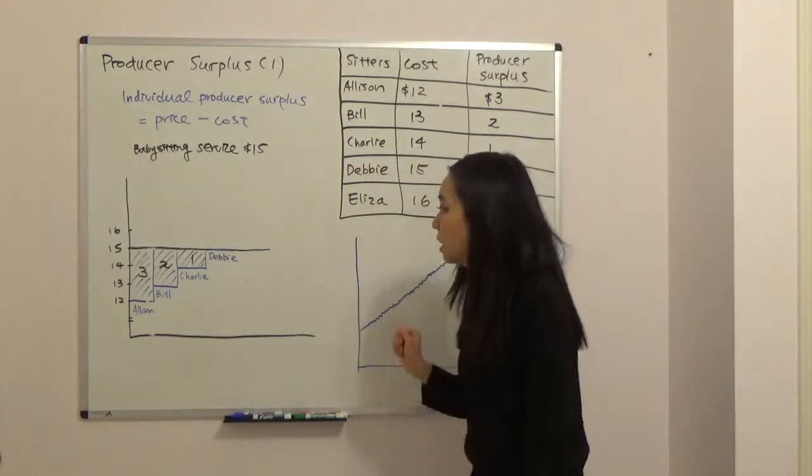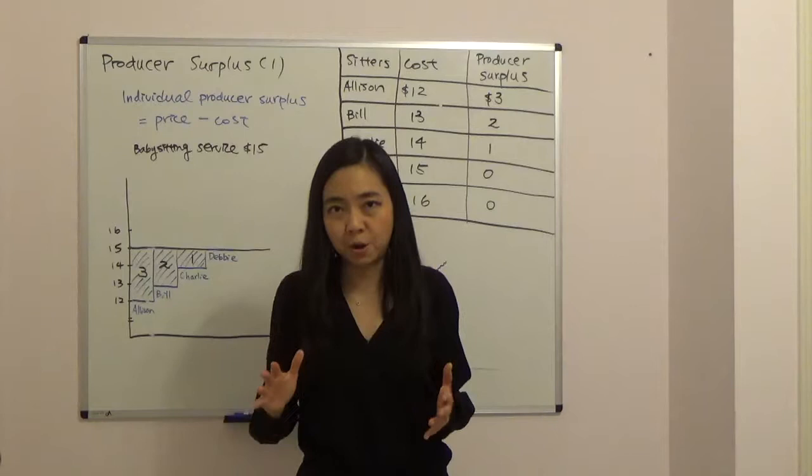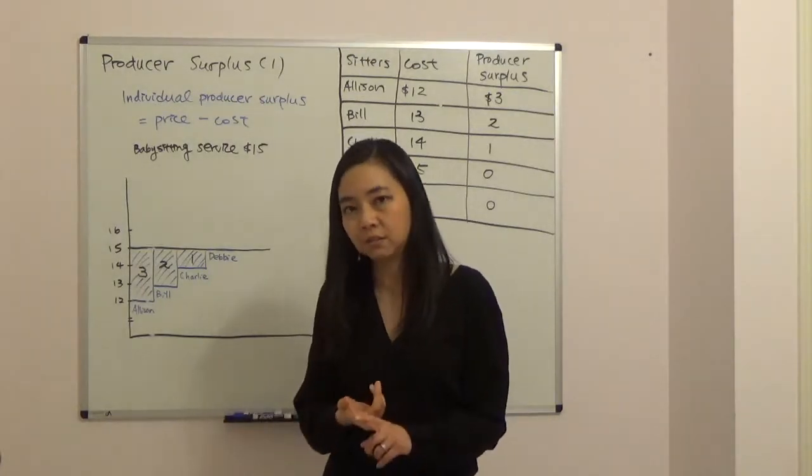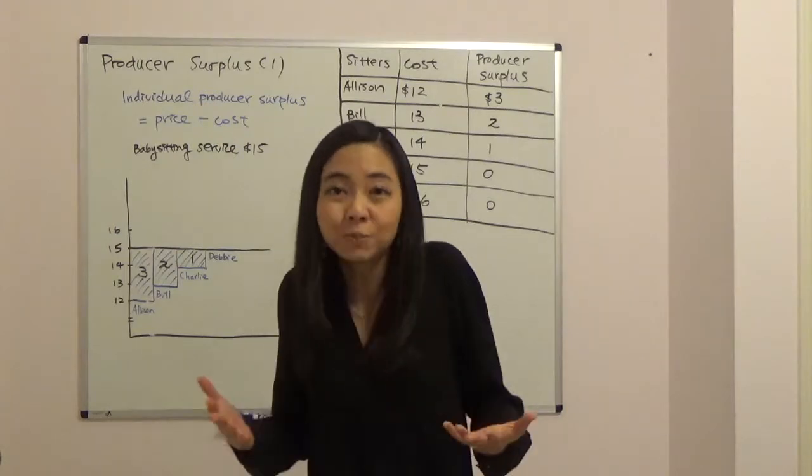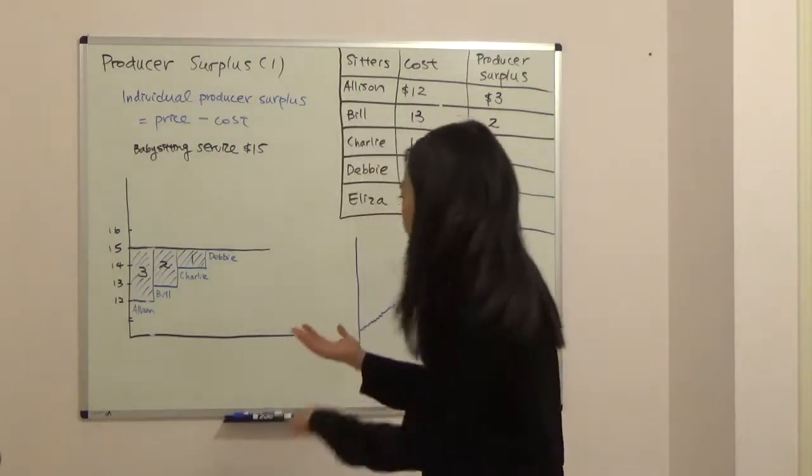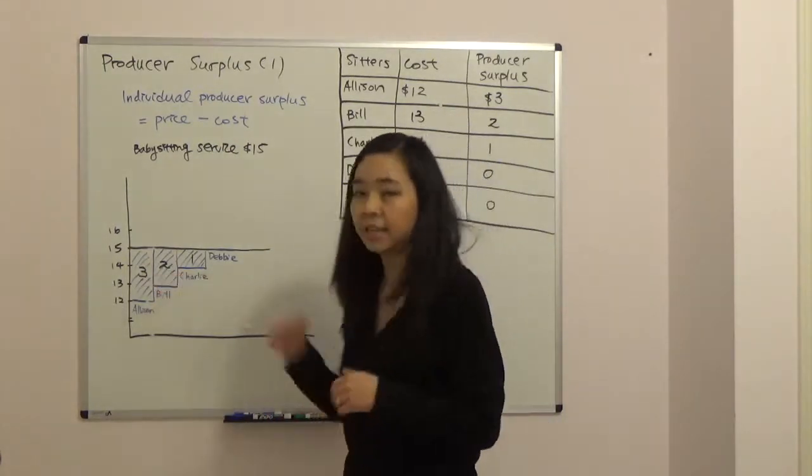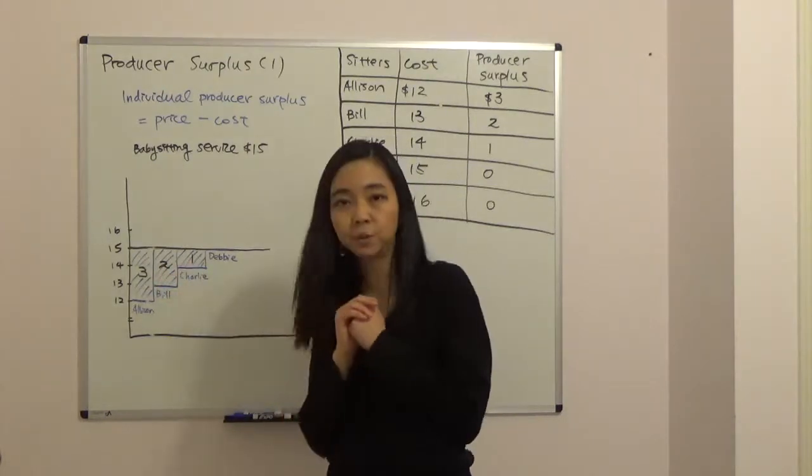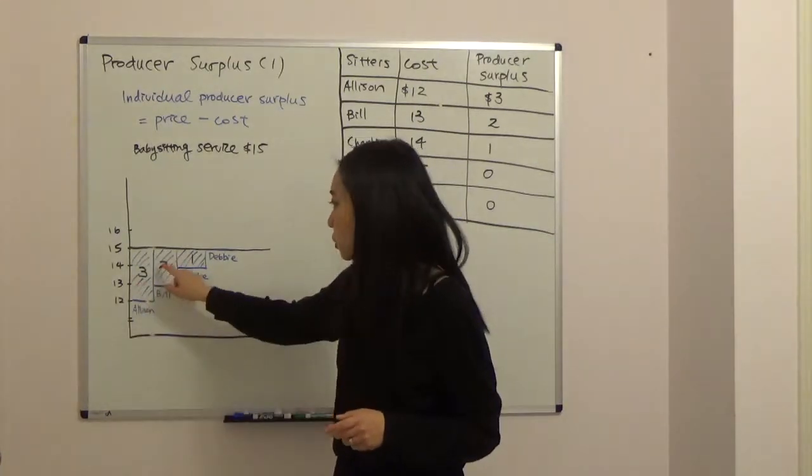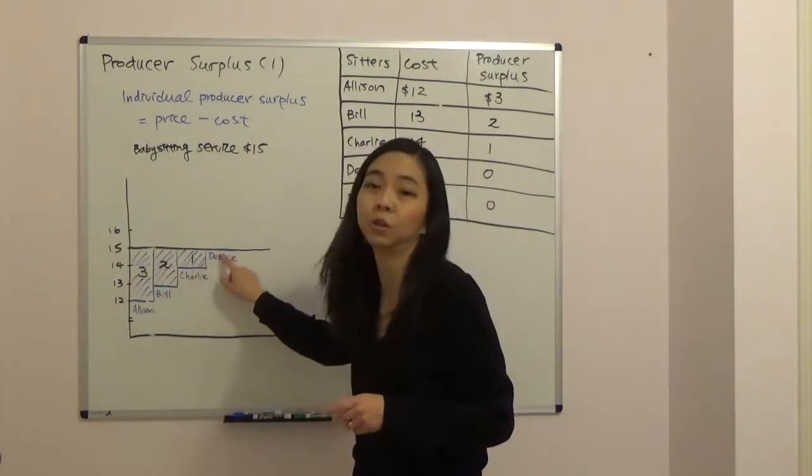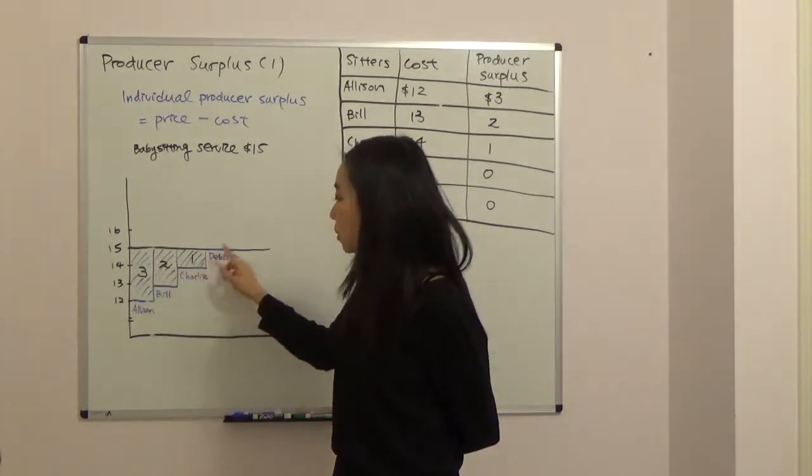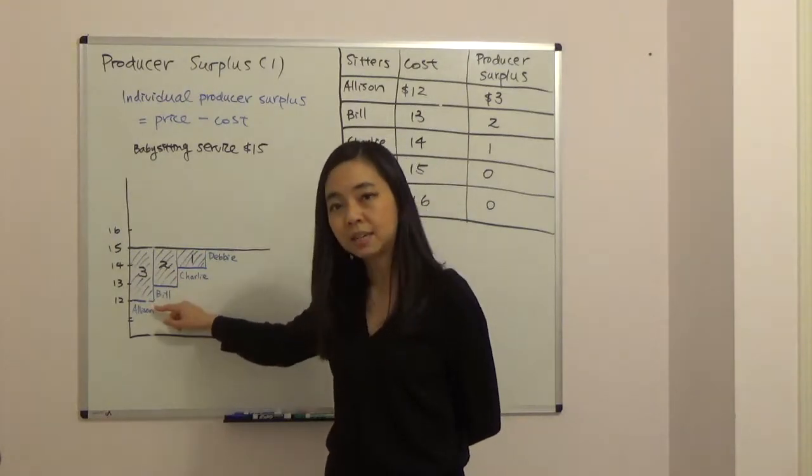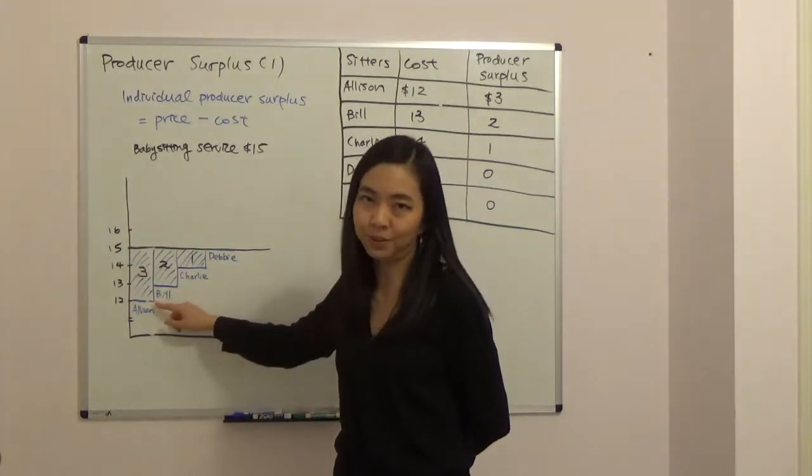Notice we don't just care about the producer surplus of an individual. We actually care about the producer surplus of all the producers, so we can sum that up. In this market, the sum of the producer surplus will be $3 plus $2 plus $1 plus $0, that gives you $6. Graphically, that will be the blue shaded area, that will be the market's producer surplus.